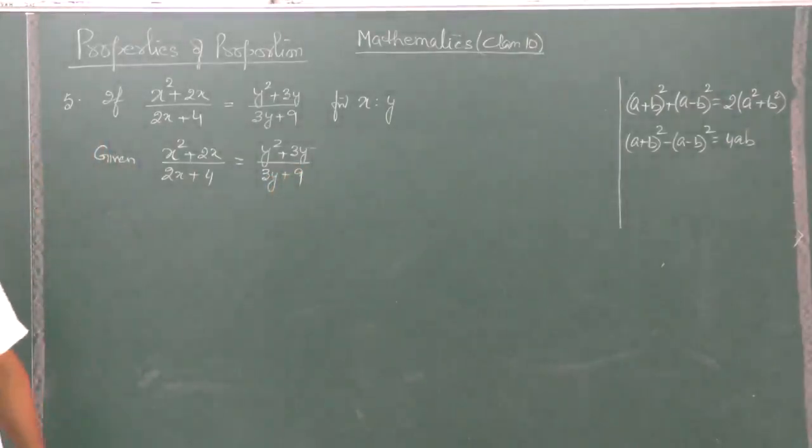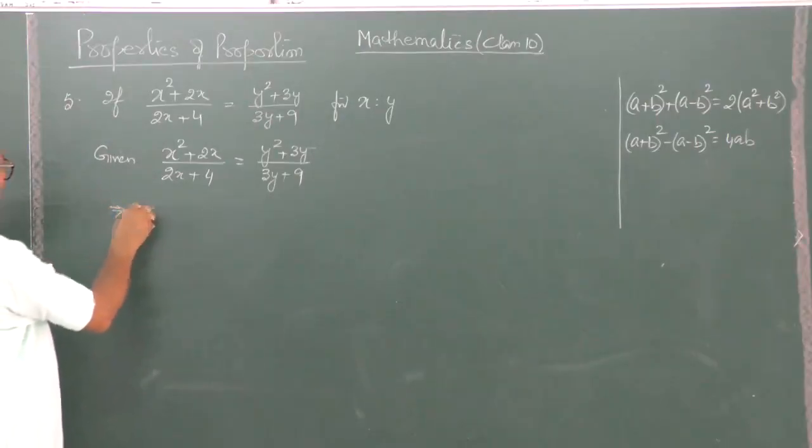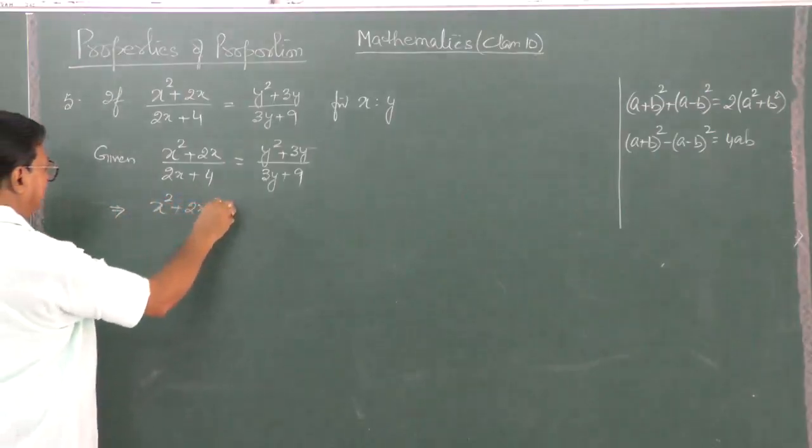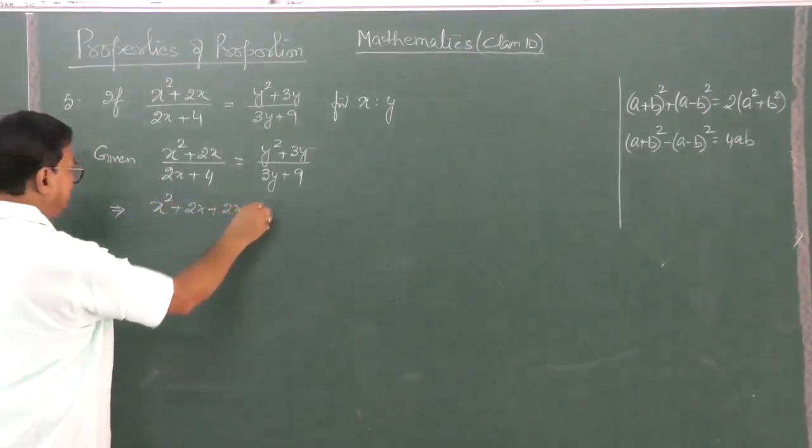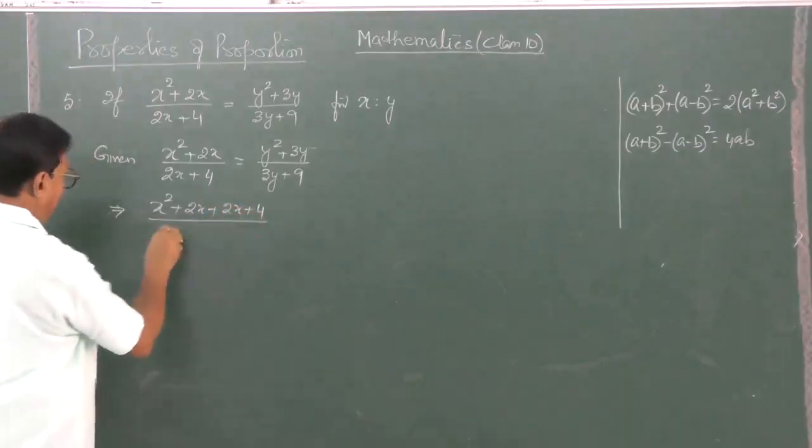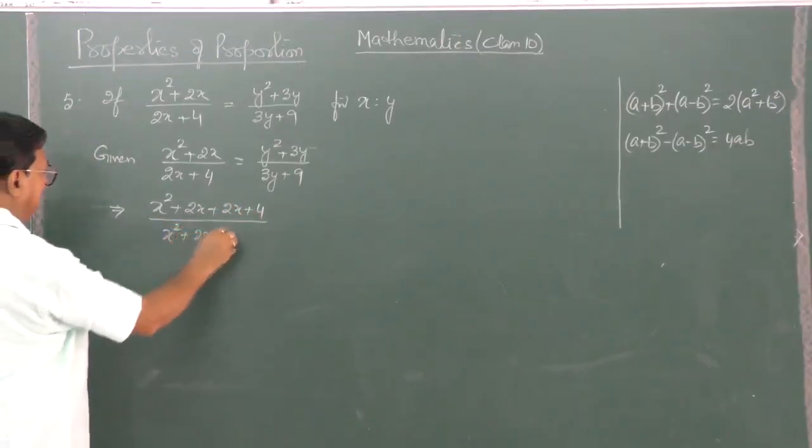I did a sum like this, the second sum. Always just start from what is given. So, this is x square plus 2x plus 2x plus 4 by x square plus 2x plus 4 by x square.